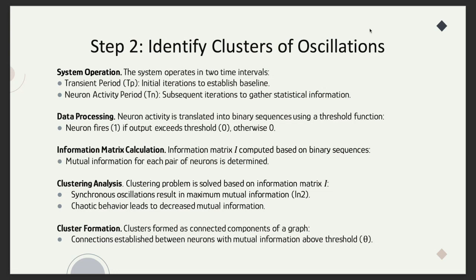From these firing patterns, we calculate an information matrix. This matrix shows how much two neurons share information. If two neurons oscillate together, the mutual information between them is highest. But if their oscillations are chaotic, this value drops to zero.